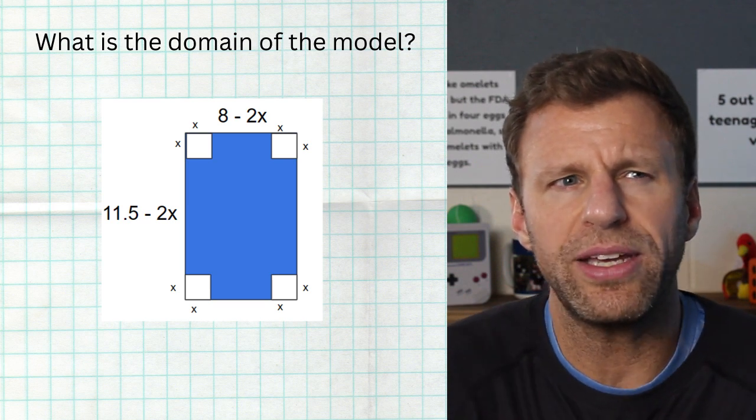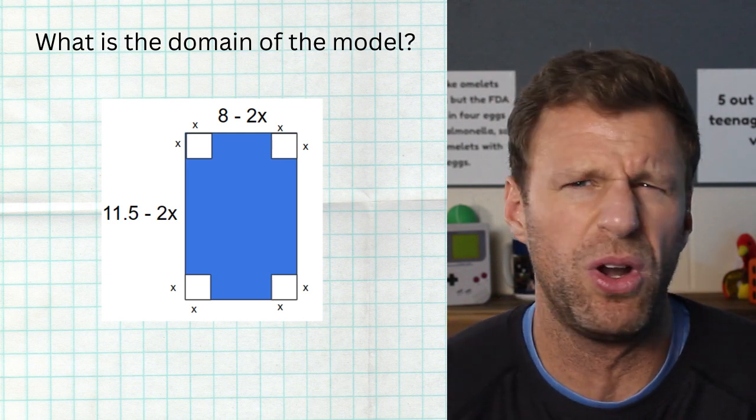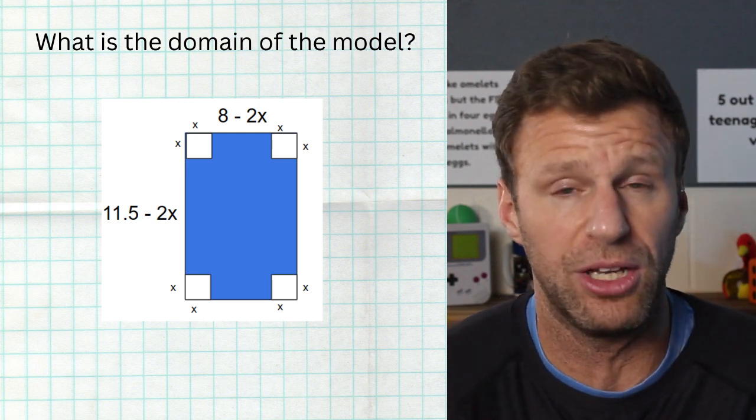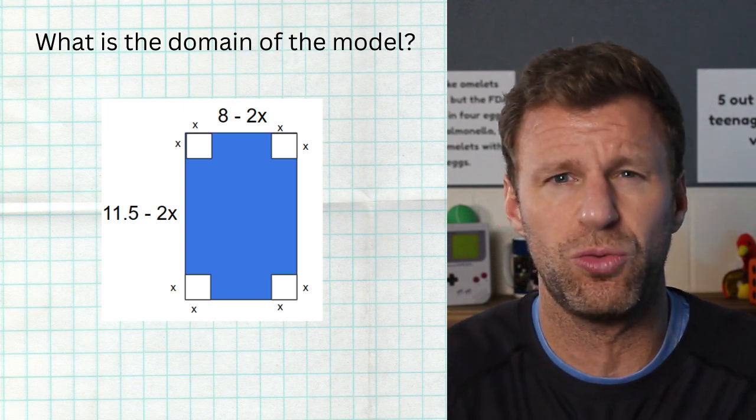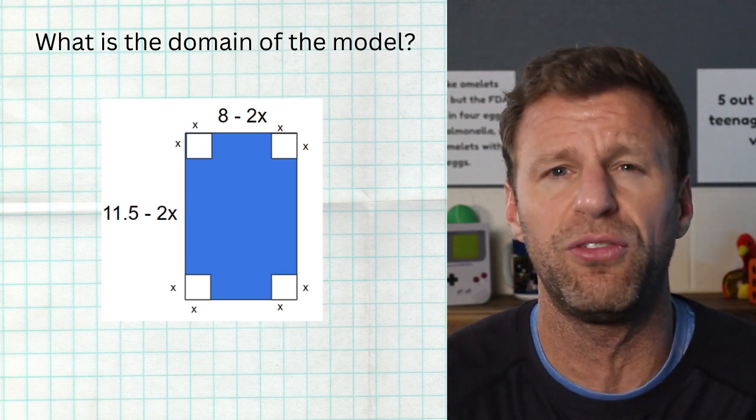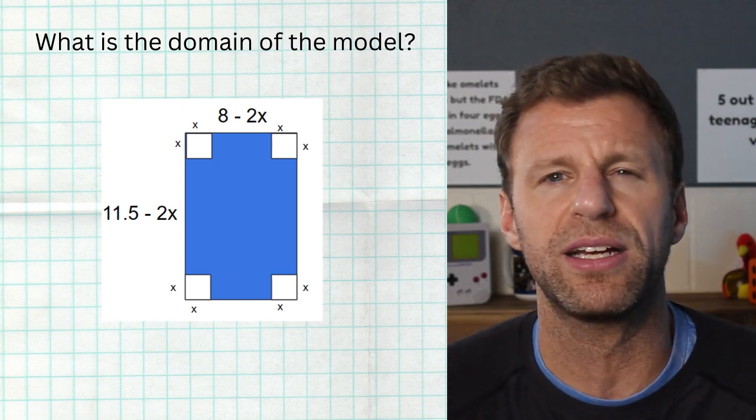Now, so I could cut out like just past zero. I mean, I literally could cut out 0.001 from each corner. And I'd have this extremely flat, very little volume box. But again, it is possible. Now, what is the most I could cut out?